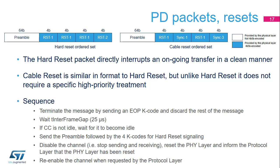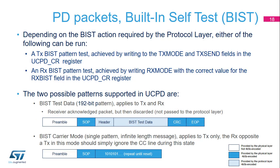The sequence required to issue the reset packet is described in this slide. The PD specification describes built-in self-test (BIST) packets used to test whether the CC line is functional. BISTs are sent on a software decision based on fields in the UCPD CR register. Software can enforce the transmission of a BIST packet and configure the receiver in test mode. Received BIST packets are not submitted to software; however, their CRC is checked. Two formats of BIST packets are defined: BIST test data, which is a packet containing a payload used to test the digital controller, and BIST carrier mode, which is a single-pattern infinite-length message used to test the physical link by capturing the CC on an oscilloscope.